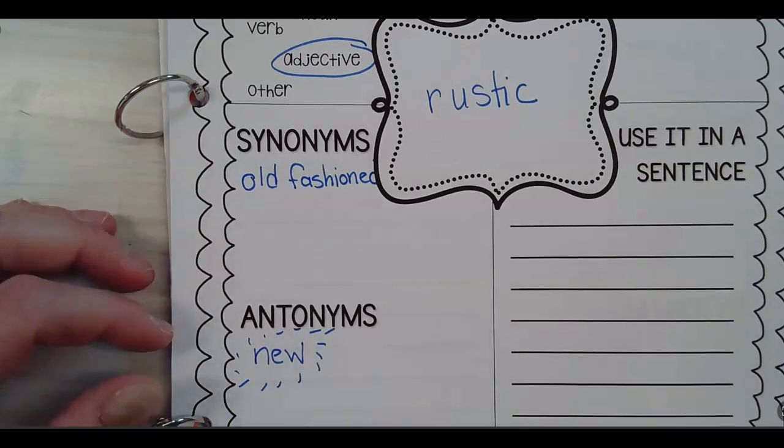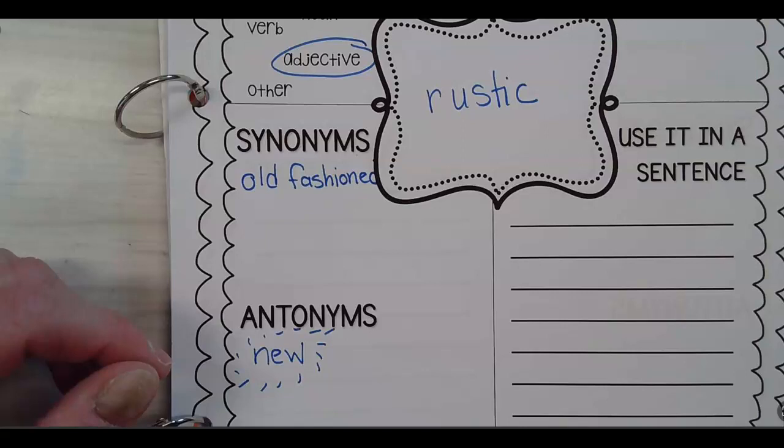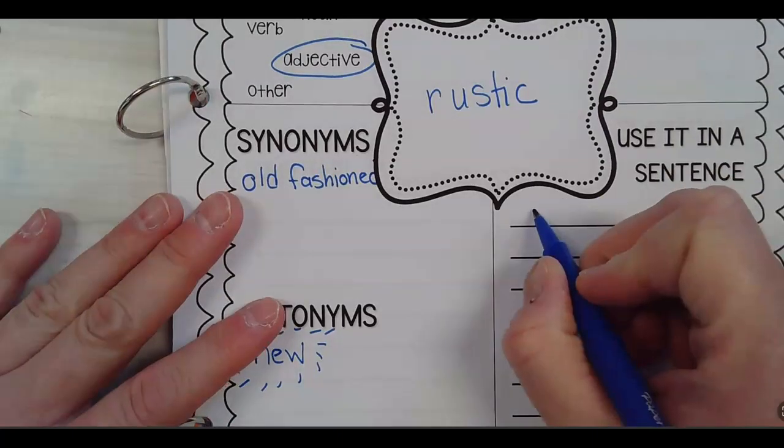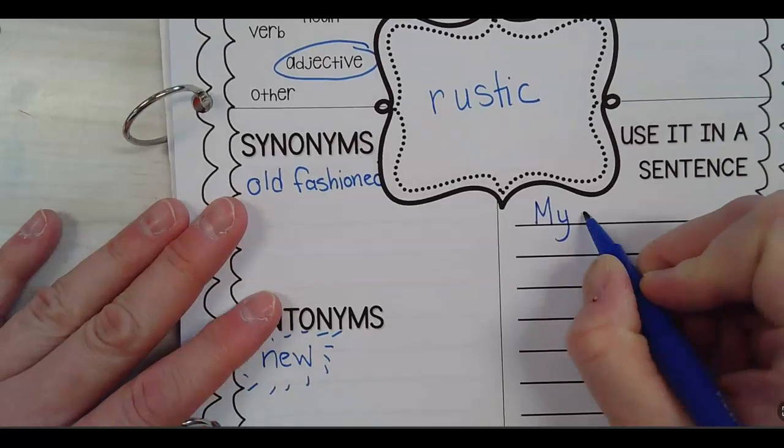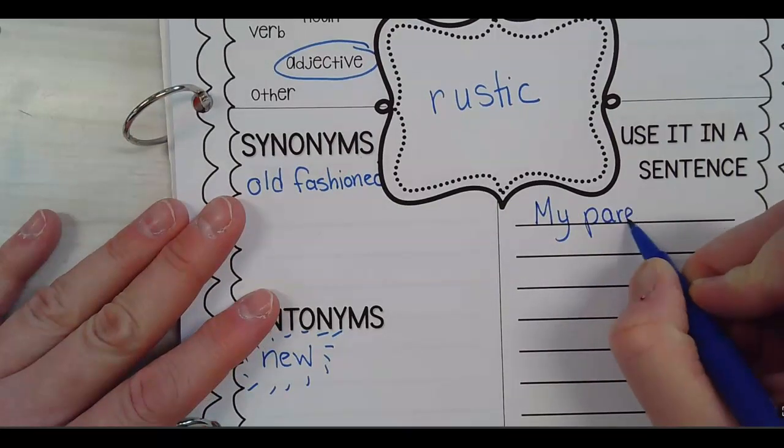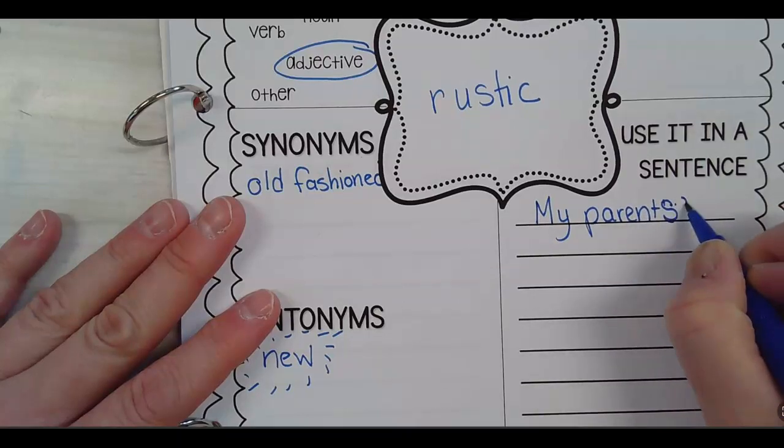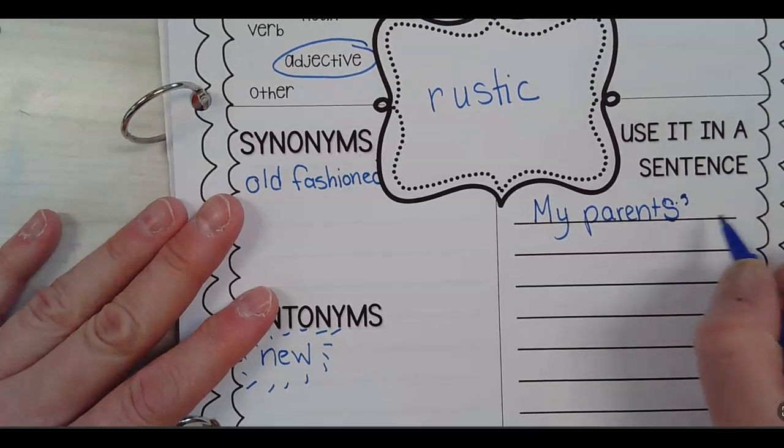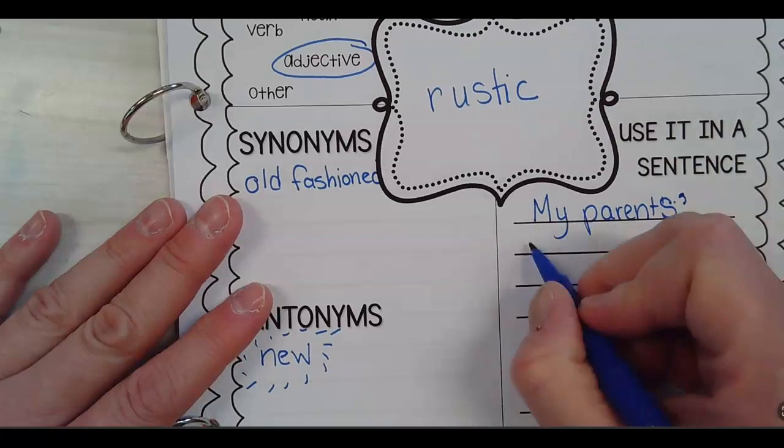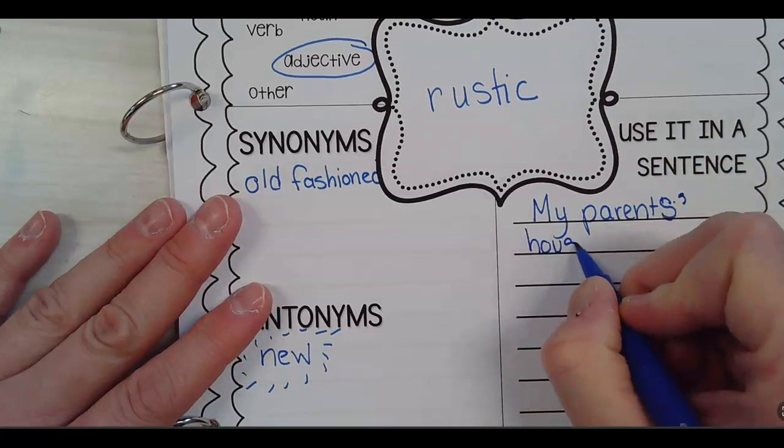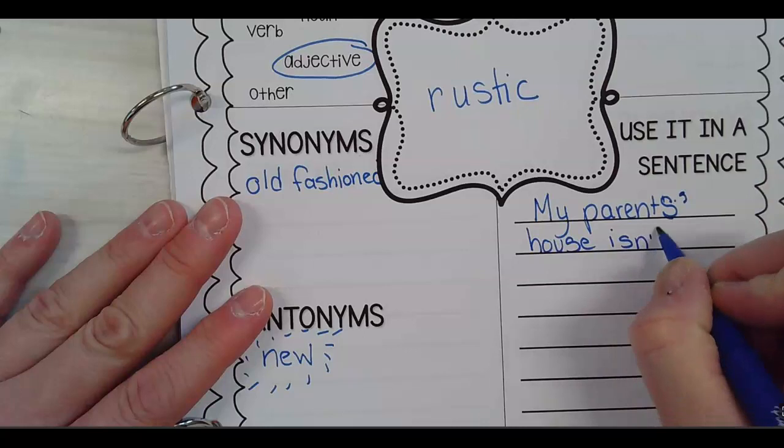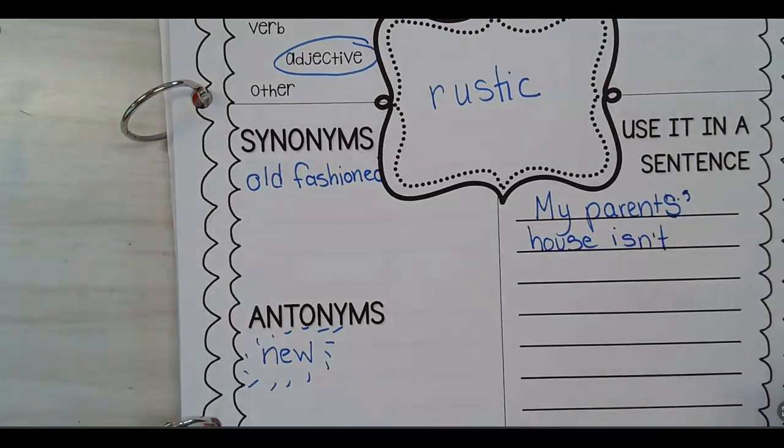Use it in a sentence. My parents' house. My parents' parents. Parents. So notice there's an apostrophe, because the house belongs to the parents.